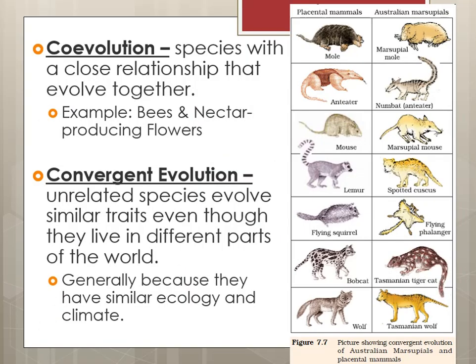We can also look at co-evolution — species with a close relationship that evolve together. This ties back to the chapter on mutualism. Bees and nectar-producing flowers evolve together because they need each other in order to do their daily jobs.